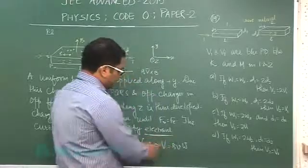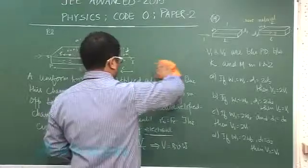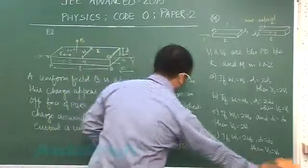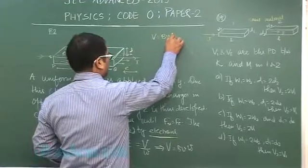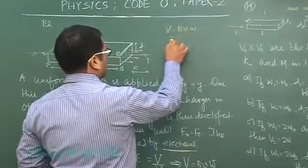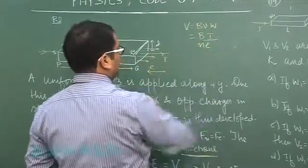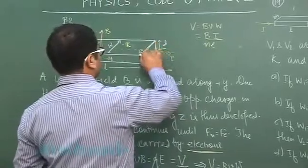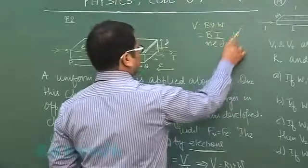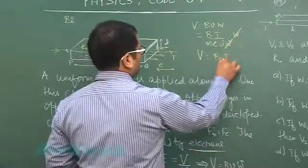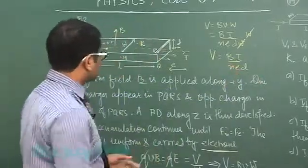So let us try to see. What we will get is that the potential difference is BVW, and V is the drift velocity which will be I upon NEA, and A would be D multiplied by W, and that would be W so that gets cancelled. So the potential difference would be BI by NED. And clearly you could see that this potential difference is not dependent on W.